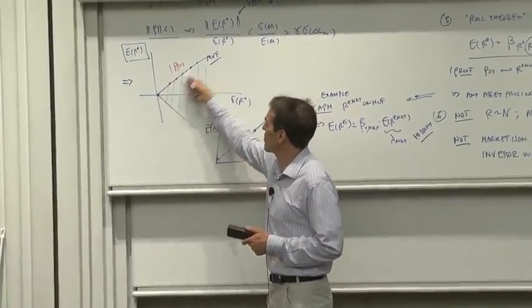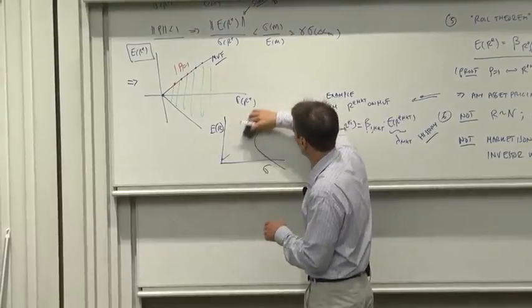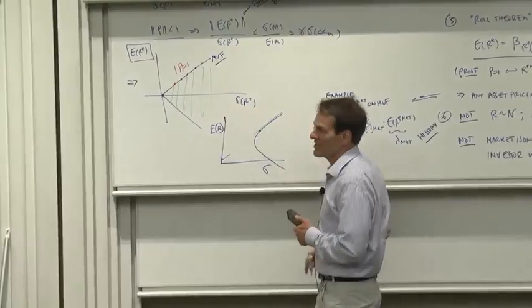So the mean variance frontier of zero-cost portfolios is always a cone, even when, if there were only risky assets, even when the mean variance frontier of actual returns looks like that.